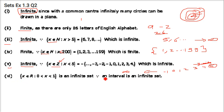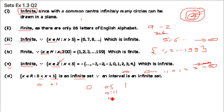Next is x belongs to R and x is between 0 and 1. Even if the range were 0 to 0.1, the answer would still be infinite. Between 0 and 1 you can have 0.5, 0.11, and infinitely more real numbers. So this is an infinite set.